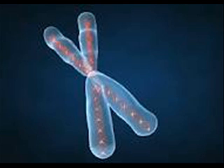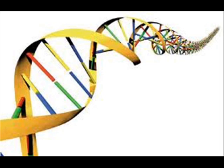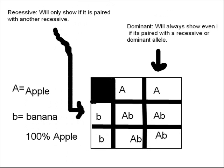DNA carries the genetic information. The genetic information codes for what the cell's division and function do. Each chromosome contains alleles. Alleles are alternate forms of a gene. A Punnett Square shows you the results of what your offspring might look like.